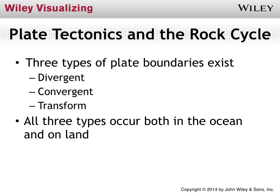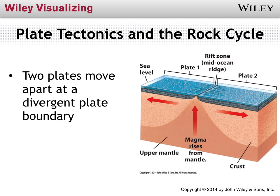We'll talk about each of these plate boundaries briefly. Keep in mind that all three types of boundaries occur both in the ocean and on land — no specific boundary is tied to only being in the ocean or only being on land. It's more about how they move differently. When we have two plates moving away from each other, we have what's called a divergent plate boundary.